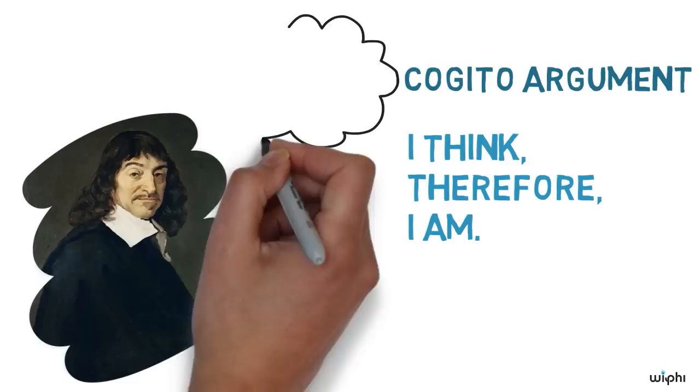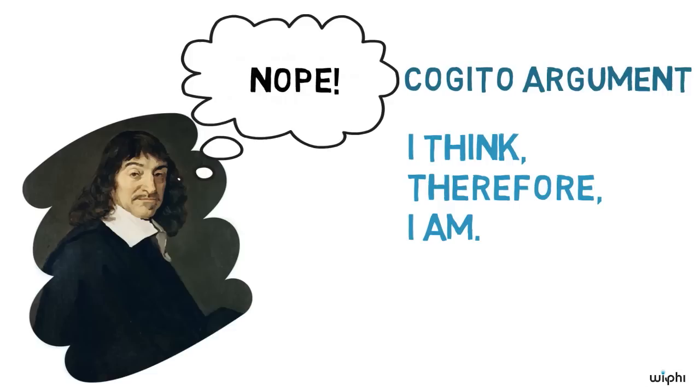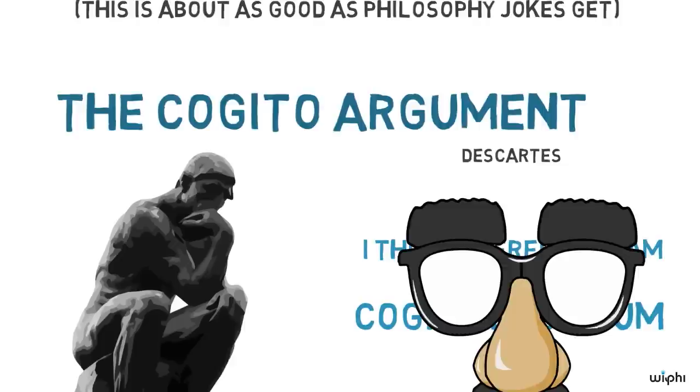The Cogito argument then assures us of the fact that there is at least one thing that is impossible to doubt and is thus absolutely certain. This is the fact that we exist while we think. And this is precisely the unquestionable fact that can figure as the unshakable and firm foundation which Descartes has been looking for in order to build his new philosophical system upon.